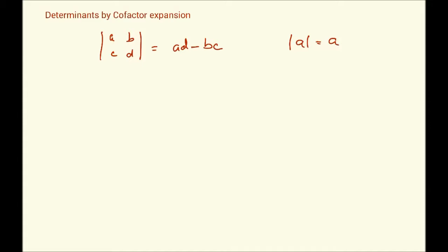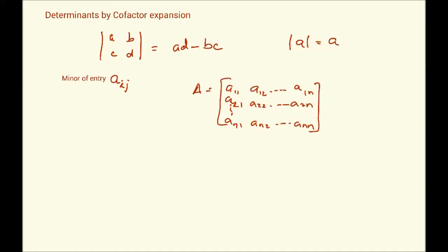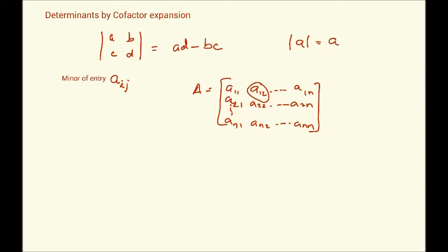Before we get to the method, we need to understand certain concepts. We'll start with the minor of entry A_ij. If we look at any general N×N square matrix A, when we say minor of entry A_ij — for example A_12, meaning the first row and second column — the minor is the determinant of the matrix that results when the i-th row and j-th column have been eliminated from matrix A.